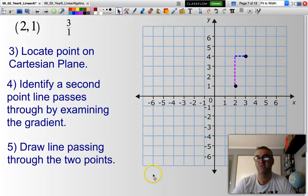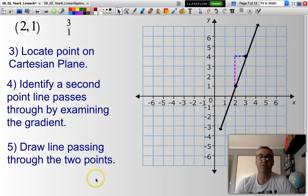And all I need to do now is draw a line that goes through both of those points. There you have it. This is a line passing through the point 2, 1 with a gradient of 3.